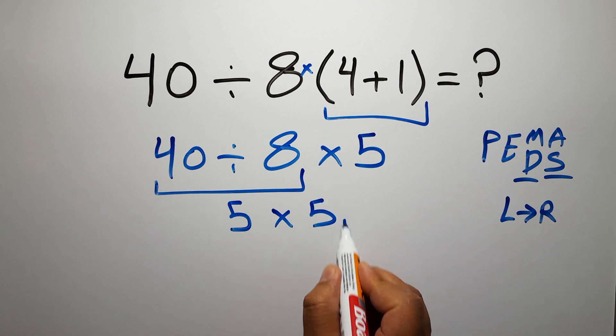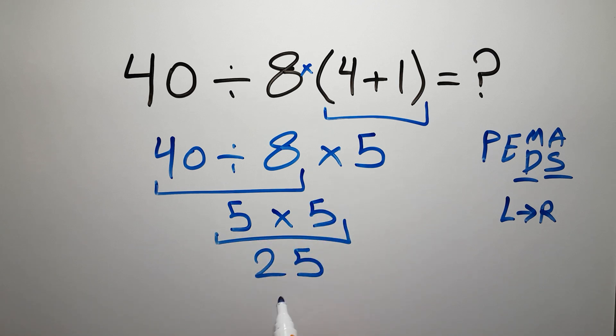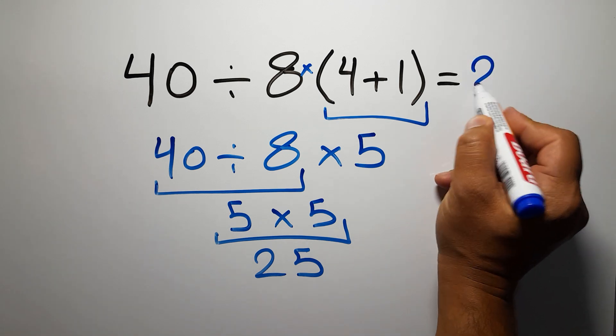And 5 times 5 gives us 25. This is our final answer to this problem. The correct answer is 25.